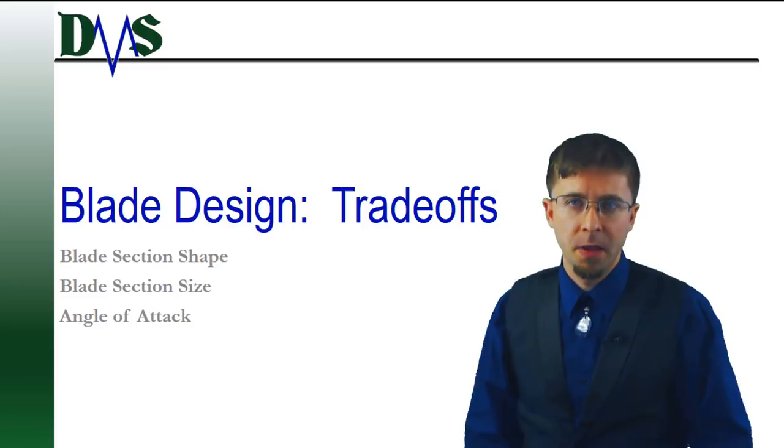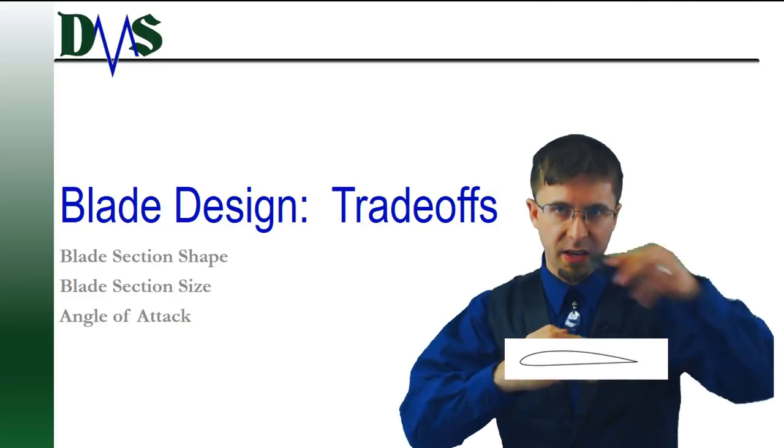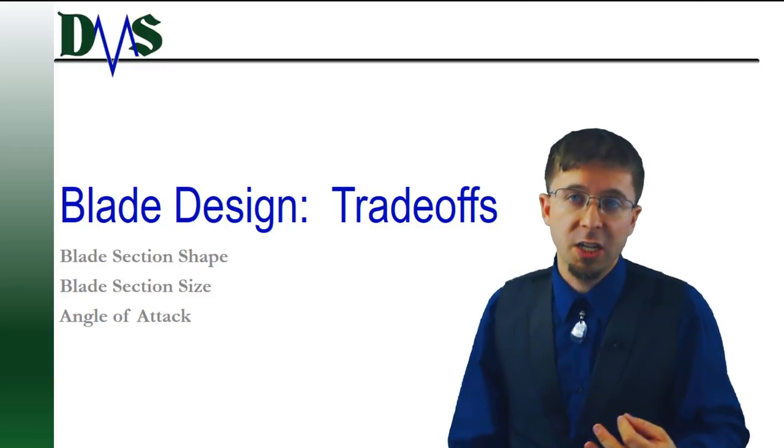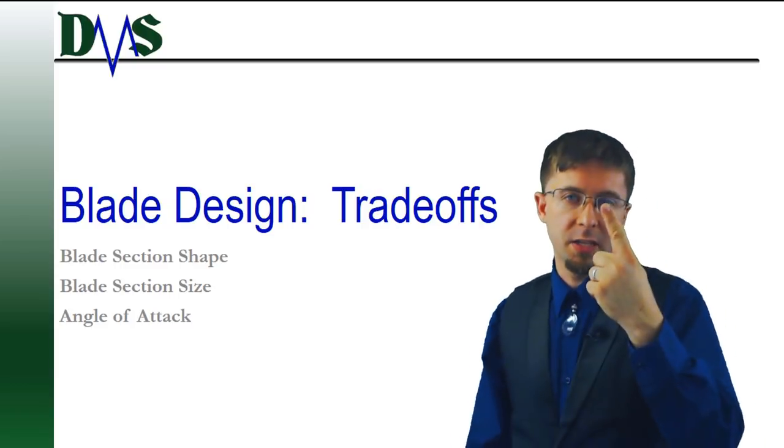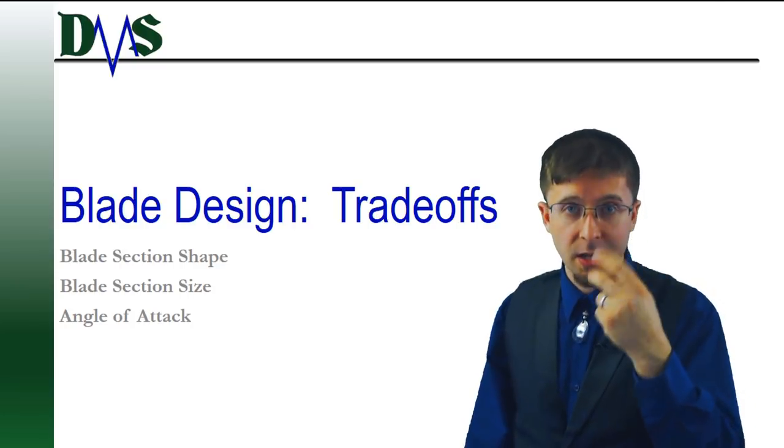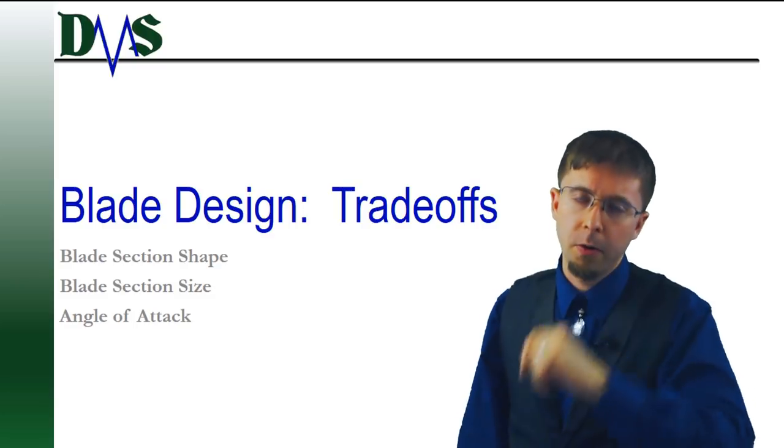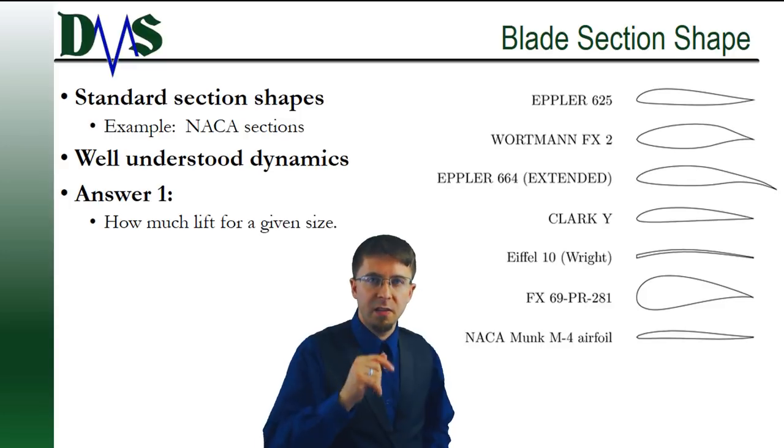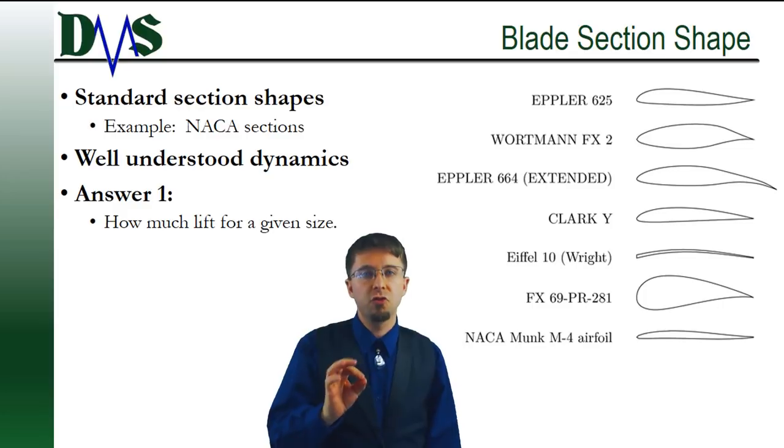So how do you design a propeller? The design for propeller blade consists of a series of blade sections, each stacked up to form the entire blade. Now for each section, the designer has to consider a trade-off between three main elements: the blade section shape, the section size, and the angle of attack. And many other little things as well, but we're going to keep it simplified for today. The game is this: for each blade section, you're going to try to get the most forward thrust with as little drag as possible.